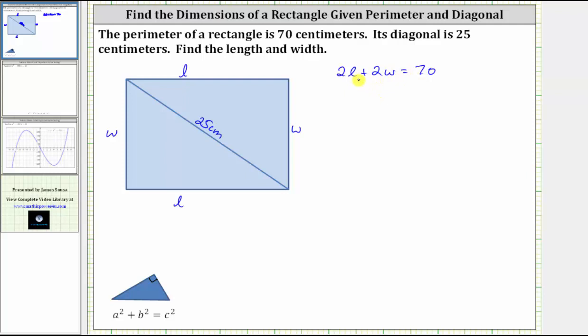The first step is to isolate the L term by subtracting 2W on both sides. Simplifying, we have 2L. 2W minus 2W is zero. So we have 2L equals 70 minus 2W. And now we divide both sides by two, or divide each term by two.